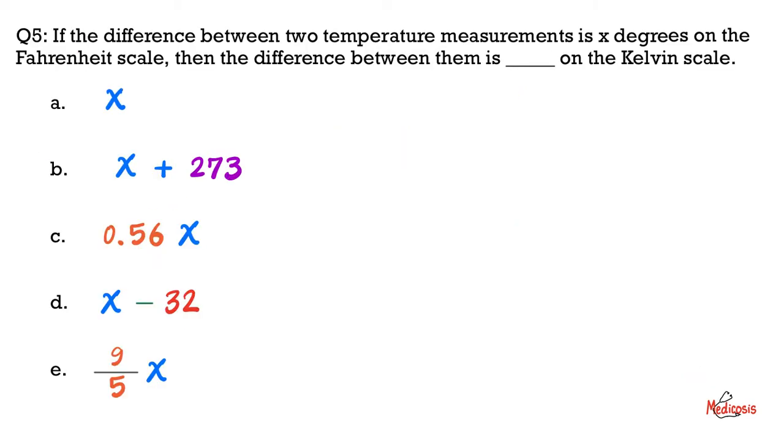Next, and here's the beast. If the difference between two temperature measurements is x degrees on the Fahrenheit scale, then the difference between them is blank on the Kelvin scale. How can we answer this? Well, pick any two random numbers on the Fahrenheit scale. Let's say we have 32 degrees Fahrenheit and we also have 212 degrees Fahrenheit.